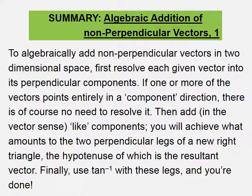Let's summarize algebraic addition of non-perpendicular vectors 1. To algebraically add non-perpendicular vectors in two-dimensional space, first resolve each given vector into its perpendicular components. If one or more of the vectors points entirely in a component direction, there is, of course, no need to resolve it. Then add, in the vector sense, like components. You will achieve what amounts to the two perpendicular legs of a new right triangle, the hypotenuse of which is the resultant vector. Finally, use inverse tangent with these legs, and you're done. Thanks for joining me.